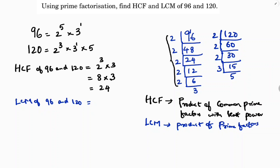Now for LCM — LCM is the product of prime factors with the highest power. We take all prime factors: 2, 3, and 5. Between 2 power 3 and 2 power 5, we take 2 power 5 because it has the highest power.